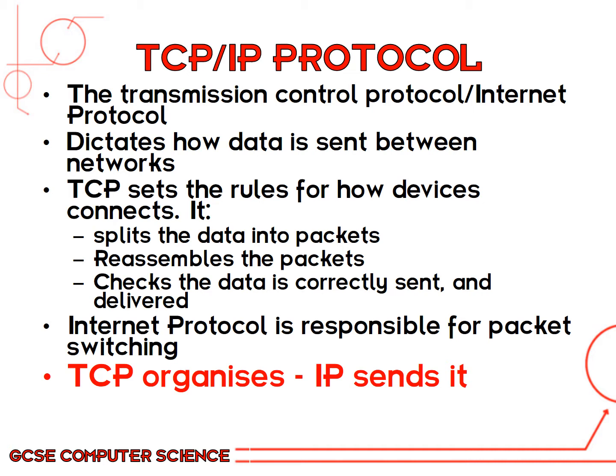The TCP/IP protocol is probably the most difficult and complicated section of networks. For the exam, you need to know what it is, what each layer does, and the advantages of using it. TCP/IP is essentially what is used to decide how data is sent between networks. The TCP part — Transmission Control — sets the rules for how devices connect, splits data into small packets, reassembles those packets at the other end, and checks whether the data is correctly sent and delivered. The IP part is responsible for packet switching. So TCP organizes all the data, and the Internet Protocol is what sends it.